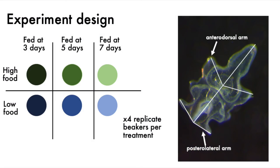I tested this by using pre-existing photos of crown of thorns sea star larvae. These larvae were reared under six different treatments. Three were given high food concentrations and the remaining three were given low food concentrations. One from each of the high and low food treatments were given food starting at three, five, or seven days after fertilization. The larvae were then photographed after 12 days, and using those photos, I measured the left and right larval arms — the anterior dorsal and the posterior lateral arms — and compared each side to quantify any fluctuating asymmetry.